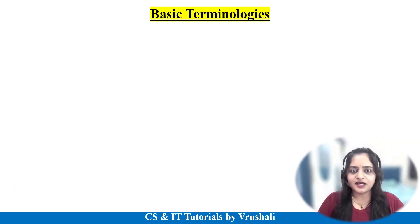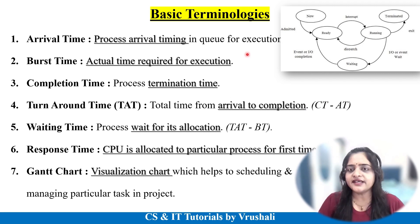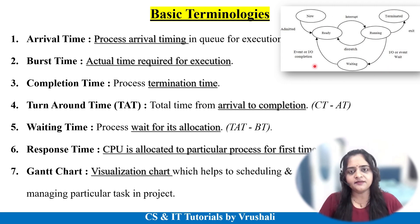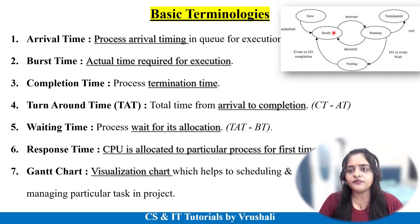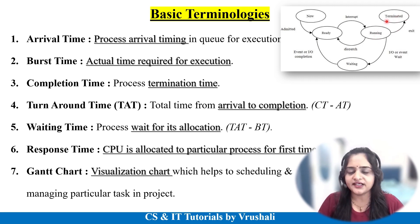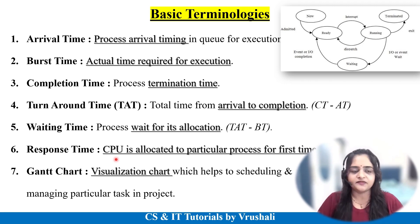Before solving the example, you must know some basic terminologies in scheduling algorithms. This is a process state transition diagram — in our previous session we already discussed this with real-life examples. The first state is the new state, where your process is created and moved to the ready state. In the ready state, the process waits for CPU allocation. After getting the CPU, it moves to the running state — the actual execution state — and after execution it goes to the terminated state.